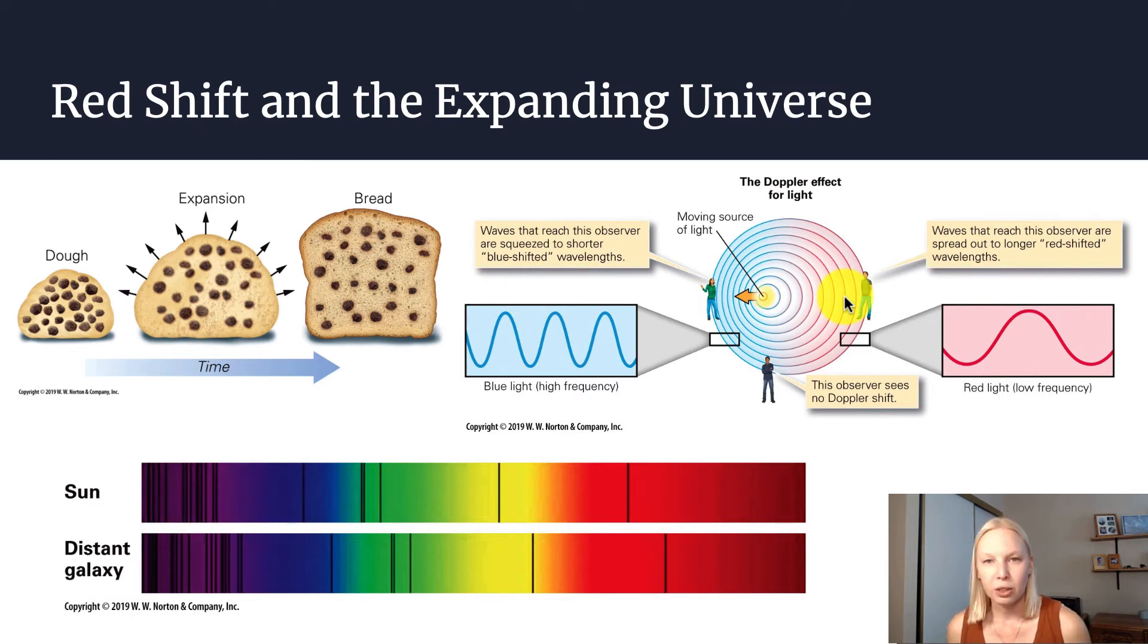So what we see when we look out at the stars is that these stars are red shifted and they're actually moving away from us. Our sun, we don't experience that because we're actually circling around our sun. We're not really moving away or toward it.